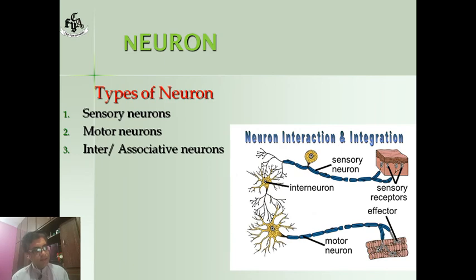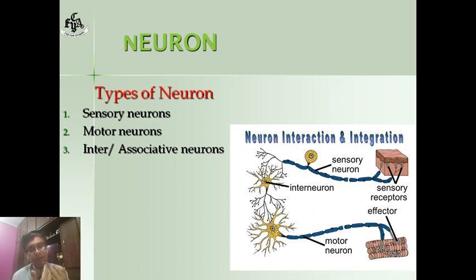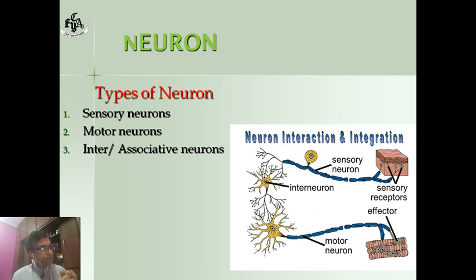This order is taken by another kind of neuron — the motor neuron. The motor neuron carries the order to the effector. Effectors are actually muscles or glands, and then muscles may contract or relax. These were the types of neurons.